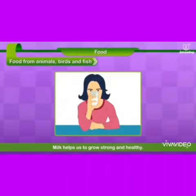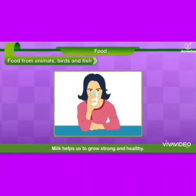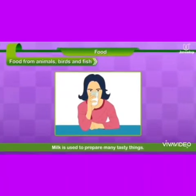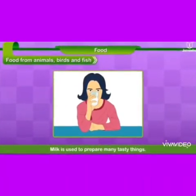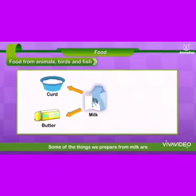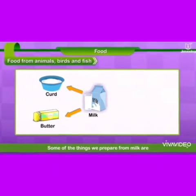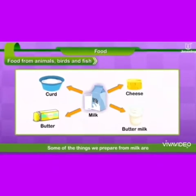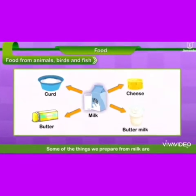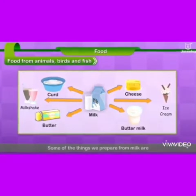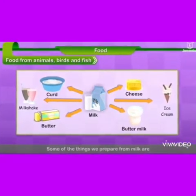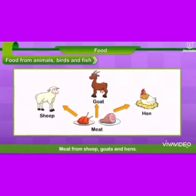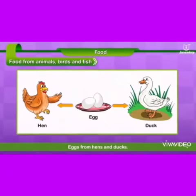We get food from animals like milk. It helps us to grow strong and healthy. Milk is used to prepare many tasty things. Some of the things we prepare from milk are curd, butter, cheese, buttermilk, milkshake, and ice cream. Meat from sheep, goat, and hens.